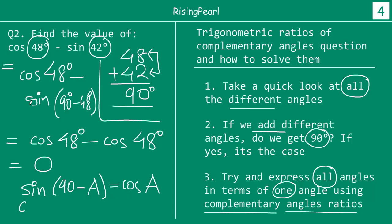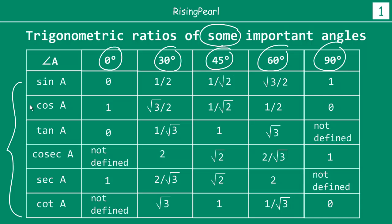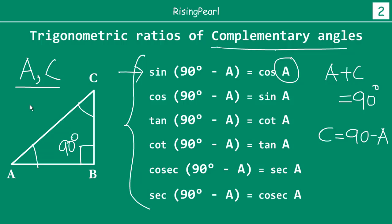It is important to remember: sin(90° − A) = cos A, cos(90° − A) = sin A, tan(90° − A) = cot A — and similarly for the other ratios. In addition to the standard angle trigonometric ratios, it is very important that we remember the complementary angle ratios as well. Now let's take a look at one more question.